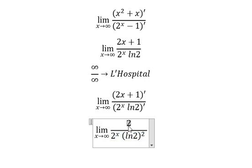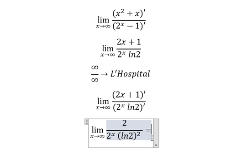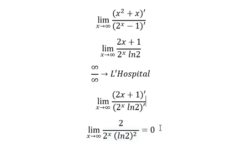This one we have number two. This one goes to positive infinity, so number two divided by positive infinity you get zero. And this is the final answer. This is the end, thank you for watching.